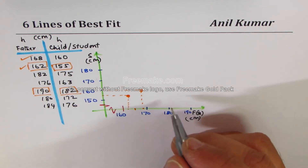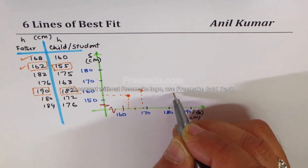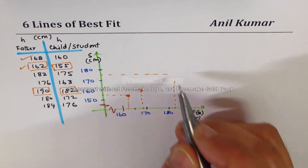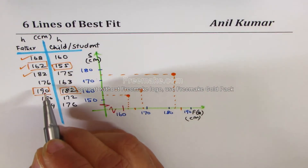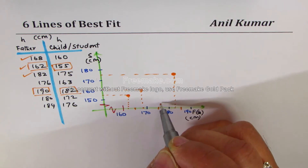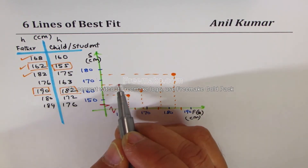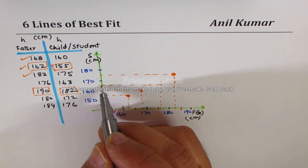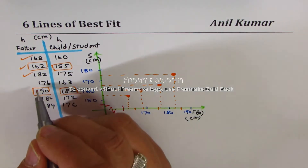The third point is 182/175: 82 is almost halfway between 180 and 190, and 175 is midway on the y-axis, so we plot that. The fourth point is 176/163: 176 is more than halfway between 170 and 180, and 163 is close to 160 on the y-axis, so we get that point plotted here.